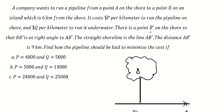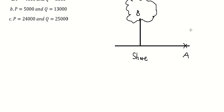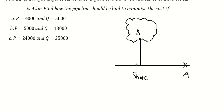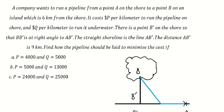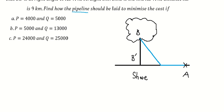The question asks about point B-star, which is at the right angle of A and B-star. They want to find the blue pipeline to make sure they can minimize the total cost. So let's set up point C in here.